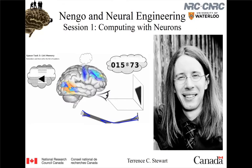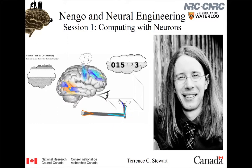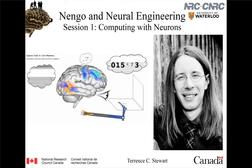Spaun has two and a half million spiking neurons organized in about 20 different brain areas. It's capable of doing very simple tasks, like the one you're seeing there where it was shown a sequence of digits and is trying to remember them and repeat them back. So that's where we want to get to.